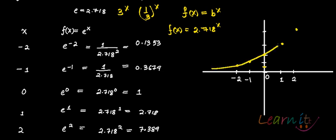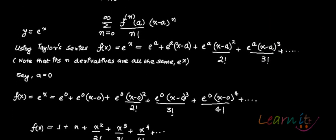Joining these points together gives us the graph of f(x) = e^x. Now, how do you get the value of e? We'll be using the Taylor series in order to derive that e ≈ 2.718.